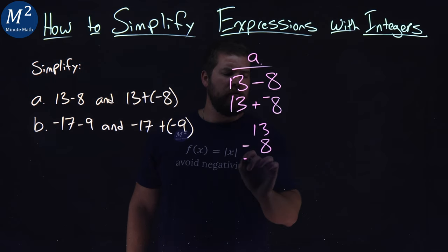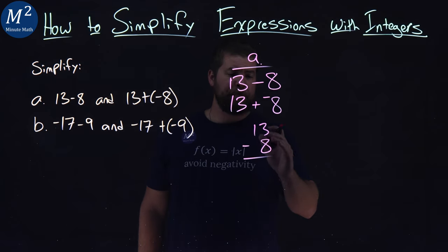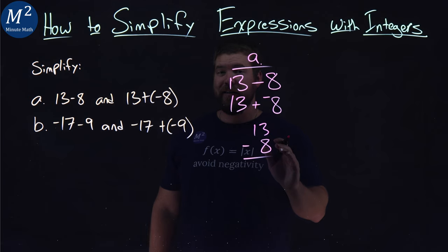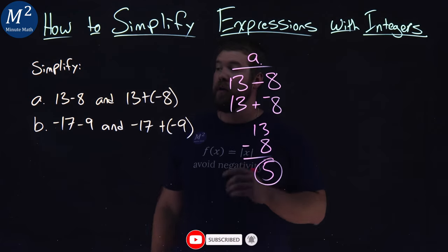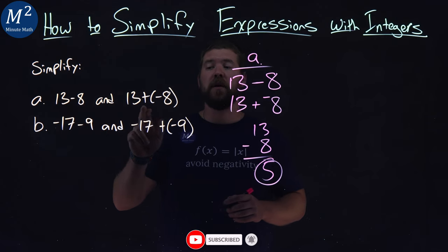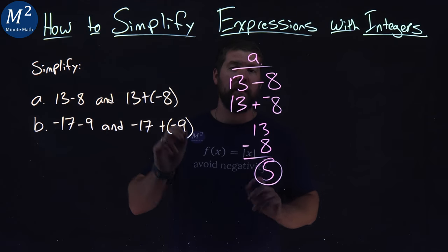So 13 minus 8, we can do the traditional method here. 13 minus 8, that just comes out to be a positive 5. And so here, 13 minus 8 and 13 plus negative 8 are both a positive 5.